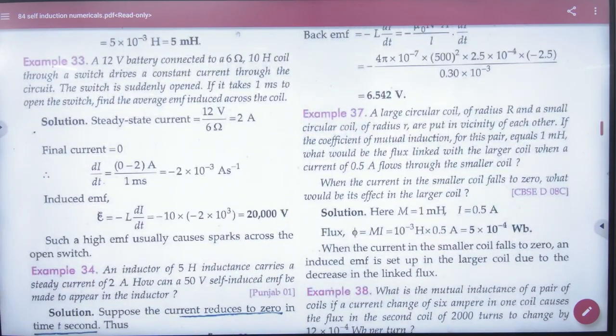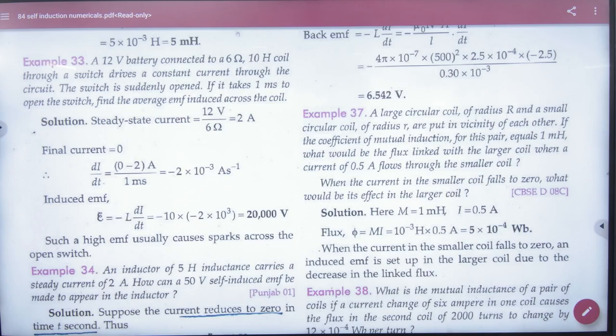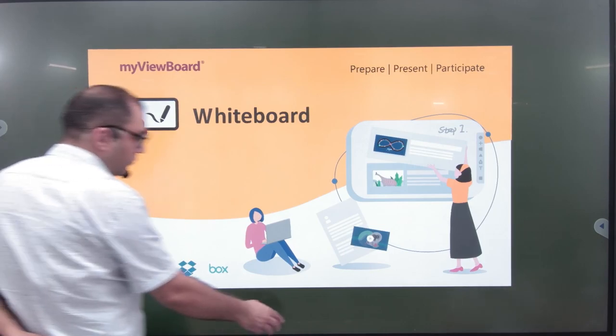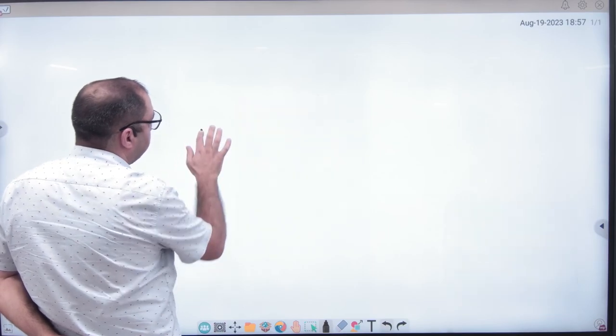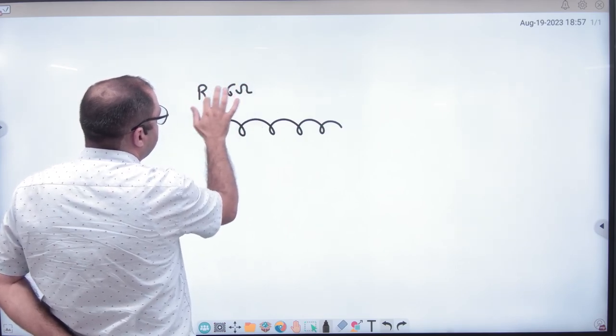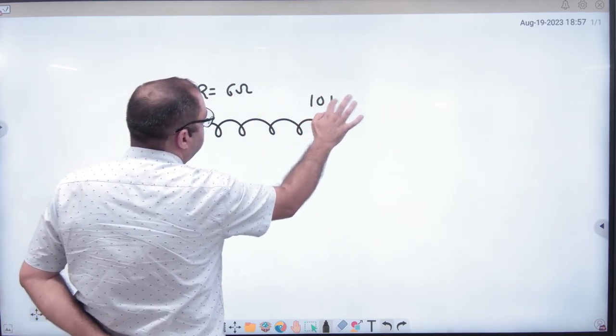Next. Example 33: 12 volt battery and 6 ohm inductor coil with 10 henry inductance. This coil has R given and L given. You have an inductor with 6 ohm resistance and inductance of 10 henry. L is given. This is connected with a battery of 12 volts.